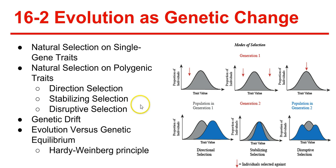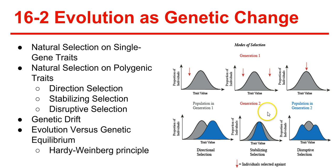Stabilizing selection is when individuals at the center of the bell curve have higher fitness than those near the ends. This narrows the overall graph so the highest frequency is concentrated right in the middle, more than a traditional bell curve. Disruptive selection is when individuals have higher fitness at both ends. This splits the curve in two — the average phenotype drops down while the two phenotypes at the ends become more frequent.